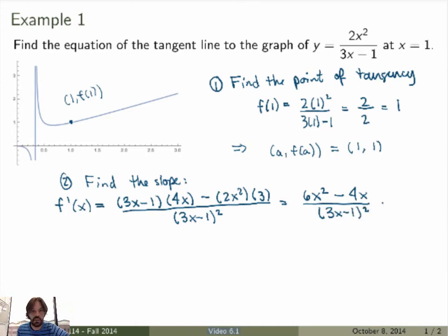Alright, so I can stop here because what I want to do now is calculate the derivative at the point x equals 1. So all I have to do is substitute x equals 1 here to find the slope of the tangent line at this point.